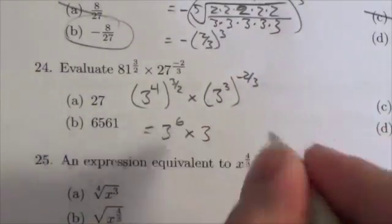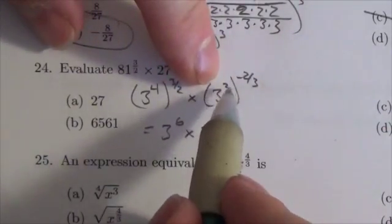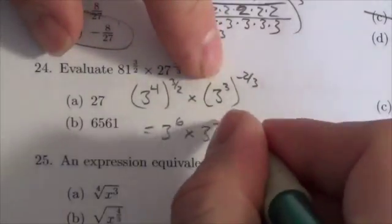Now over here, this is going to be 3, 3 times negative two-thirds. Well the threes will cancel. I'm going to be left with negative 2.